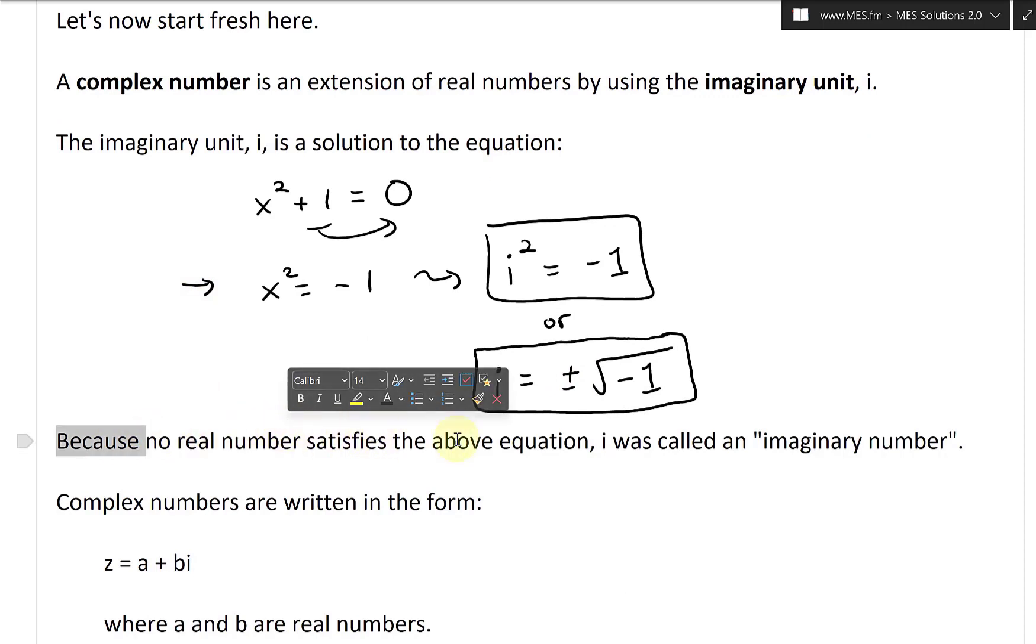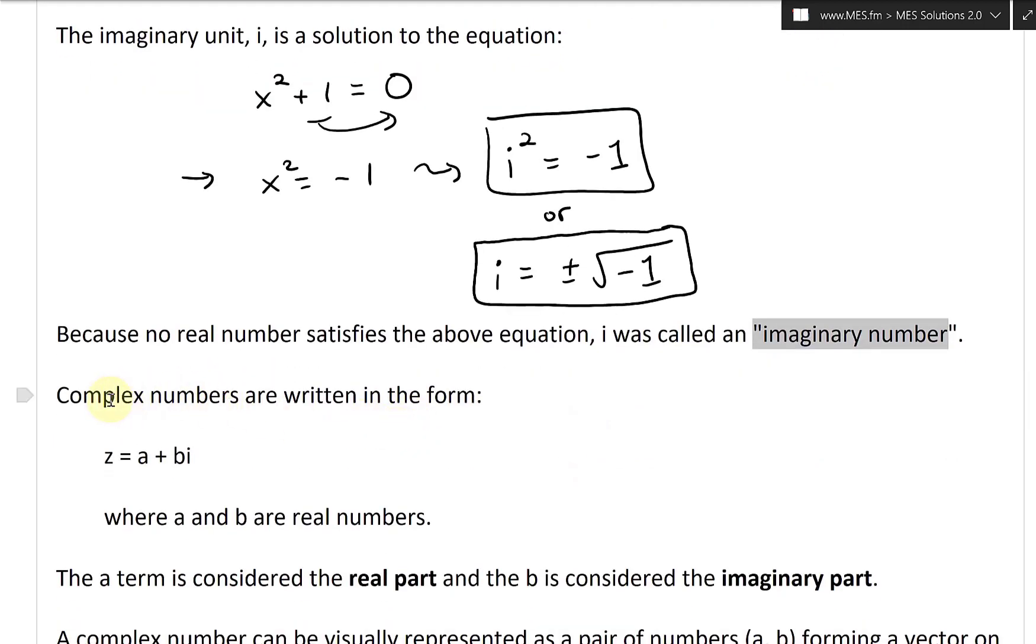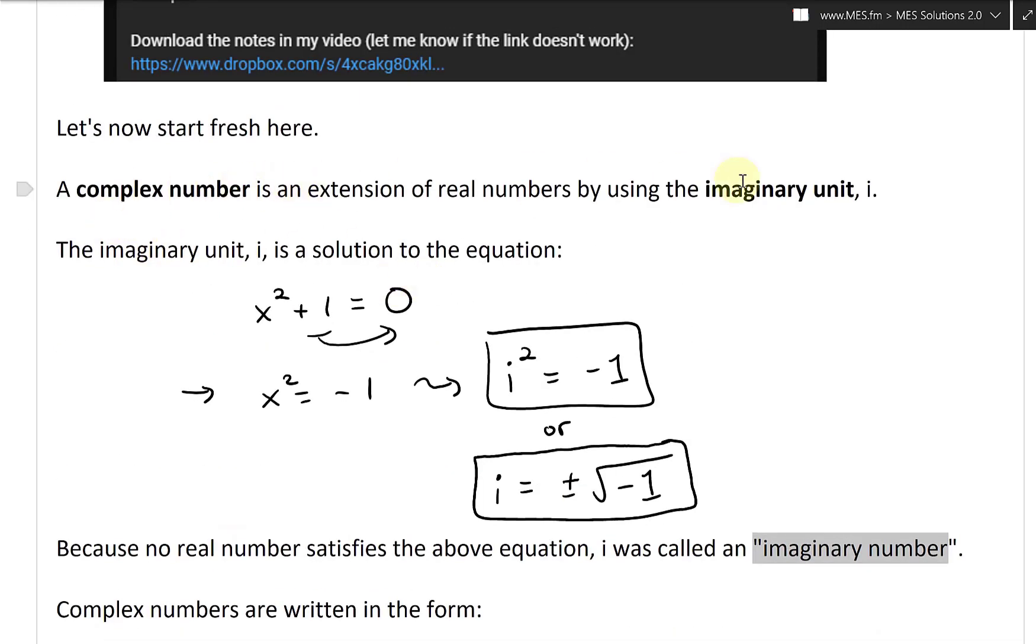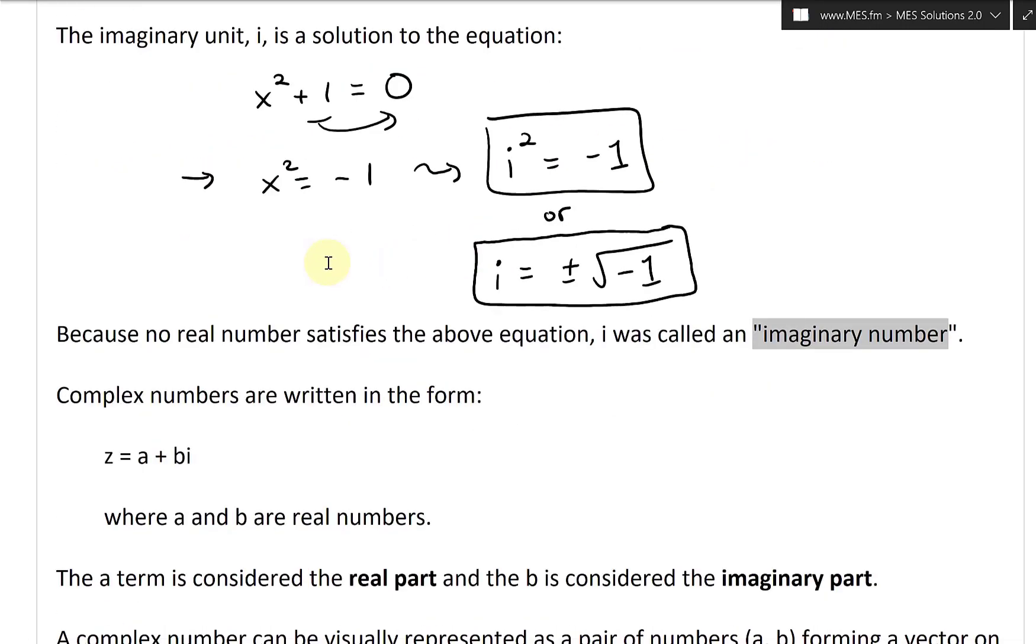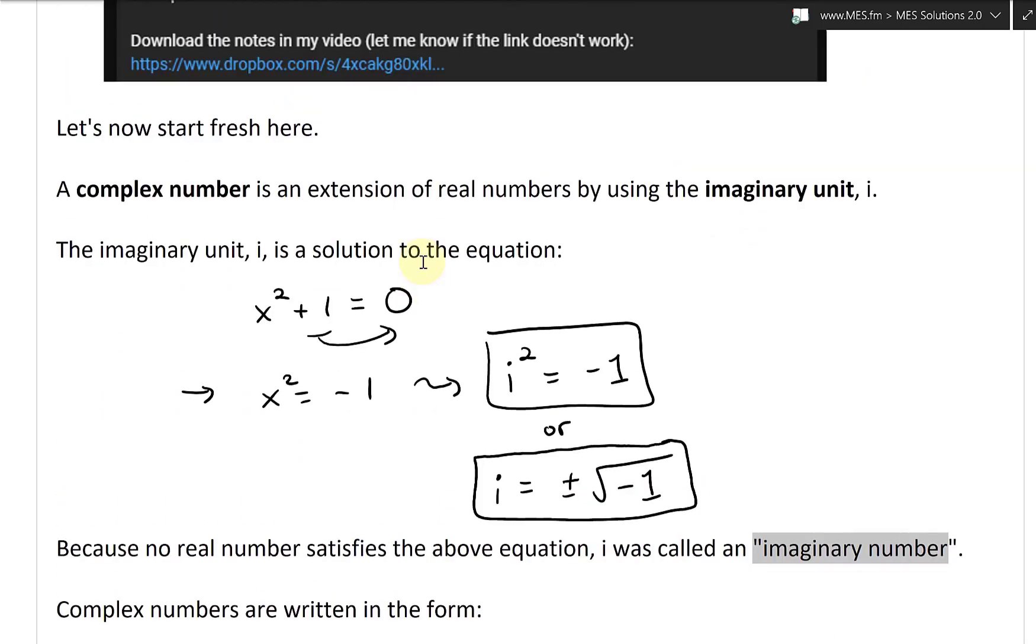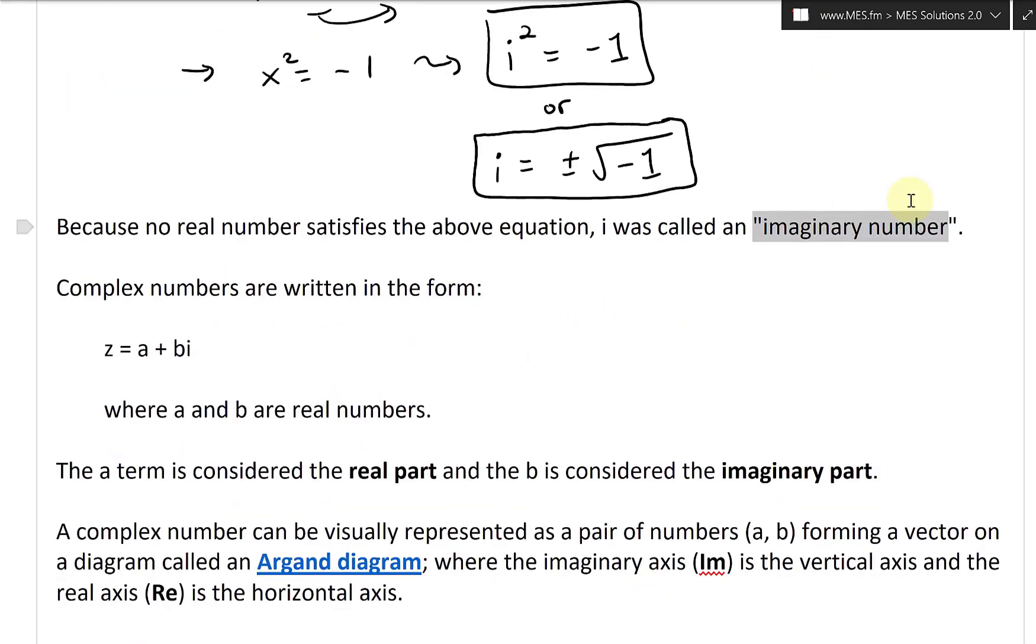Because no real number satisfies the above equation x² + 1 = 0, i was called an 'imaginary number' and still is called that in many places. That's imaginary number or imaginary unit. I've always called it imaginary number. Complex numbers are written in the form: